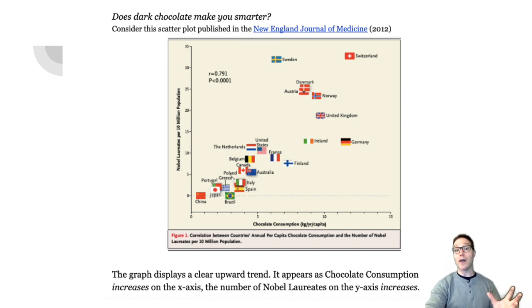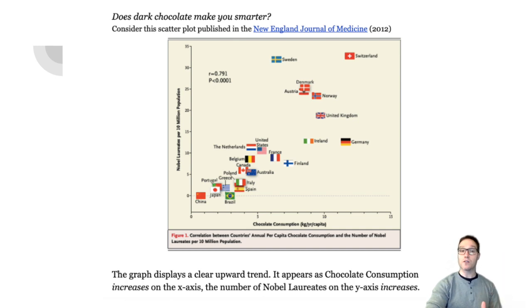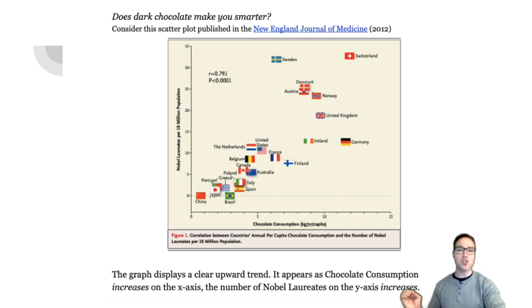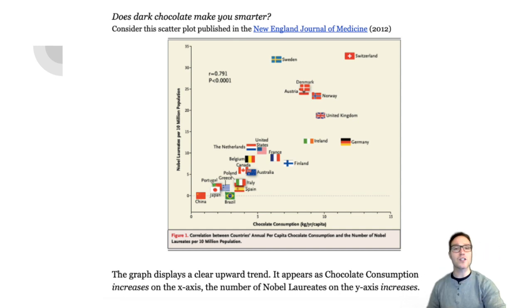A Nobel laureate is a Nobel Prize winner. So the Y axis is the number of Nobel Prize winners in the population. The number of Nobel Prize winners might be a measurement of how intelligent the country is. This graph displays an upward trend. It appears that as chocolate consumption is increasing, the number of Nobel laureates is also increasing. This is called a positive or direct association.